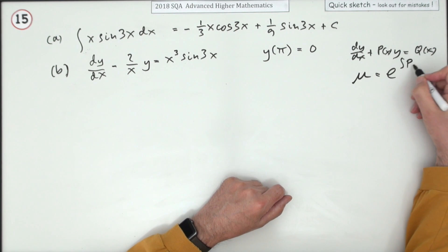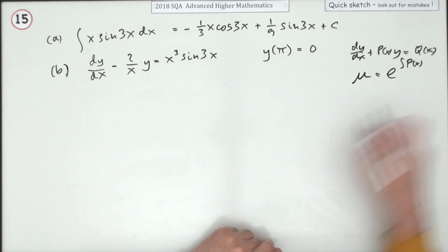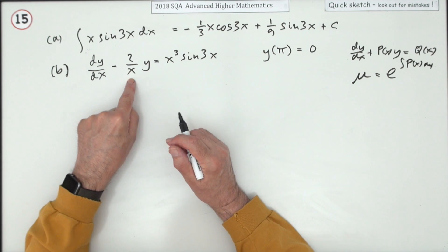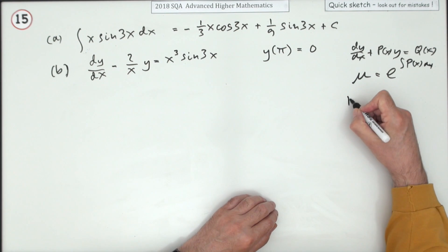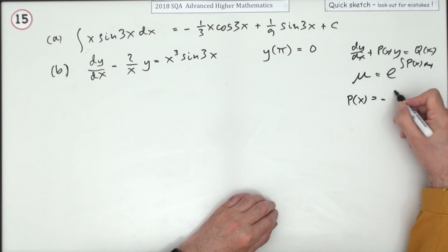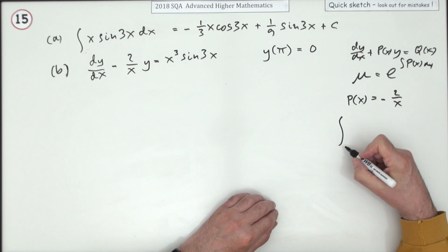Find the integrating factor. Since it's negative 2 upon x, I'll just do that first of all. So if p of x - although you don't want to give them names - is negative 2 upon x, that means I'm looking for the integral of negative 2 outside, just dx over x.